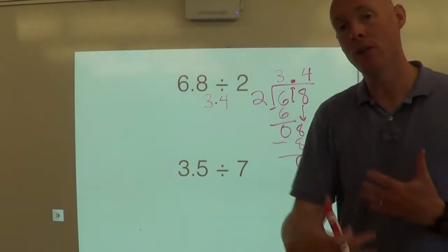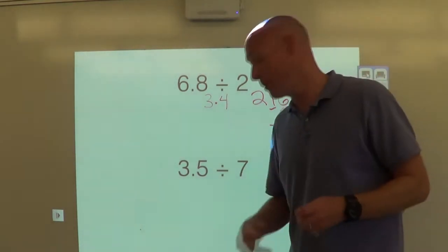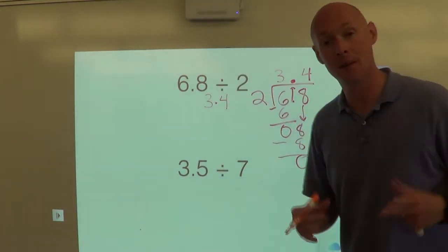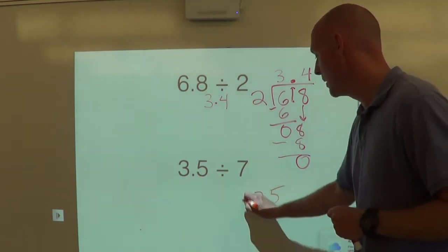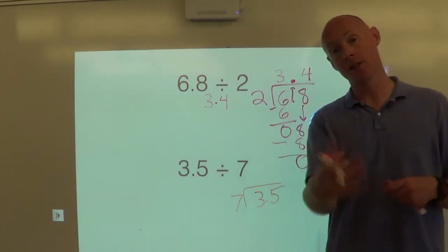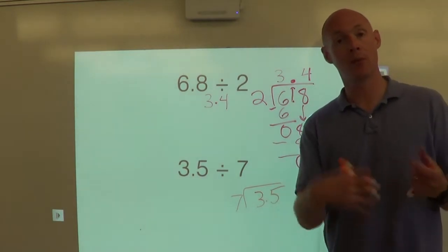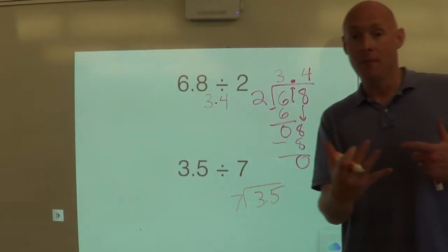Example number two. This is what I want you to solve. I'm going to do the first step, though, for you. Step one, set up the problem. So we have 3.5 divided by 7. 3.5 goes on the inside, 7 on the outside. Step one is done. I want you to do step two, bring the decimal up, and then step three, divide as normal on your own. Let's move to the next set of math boxes.